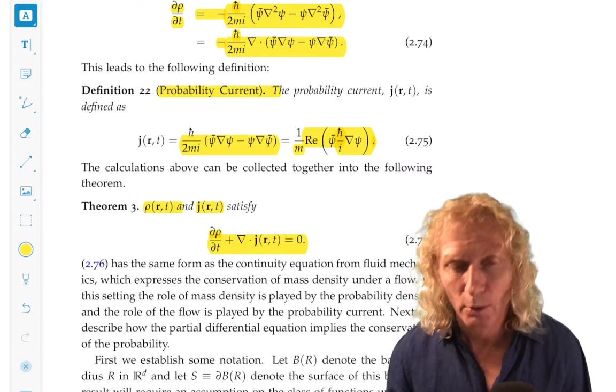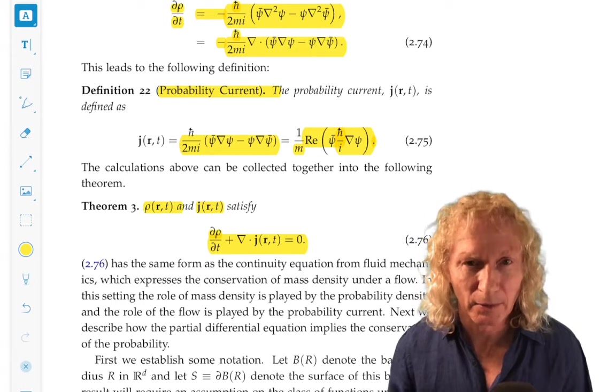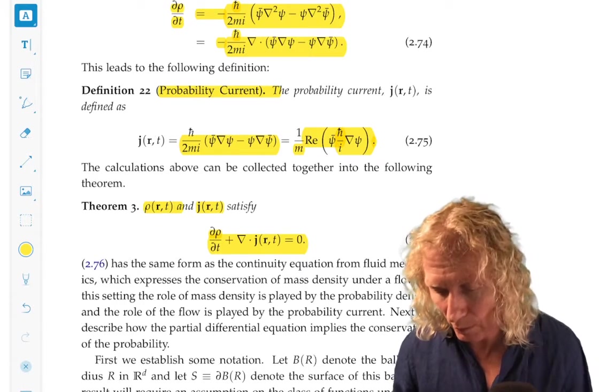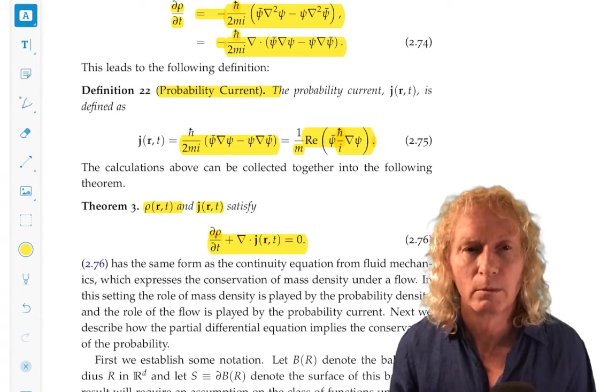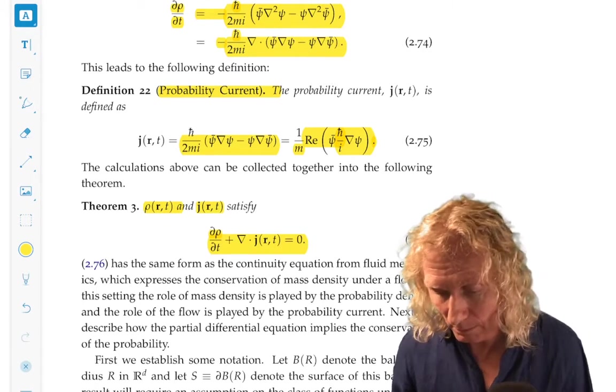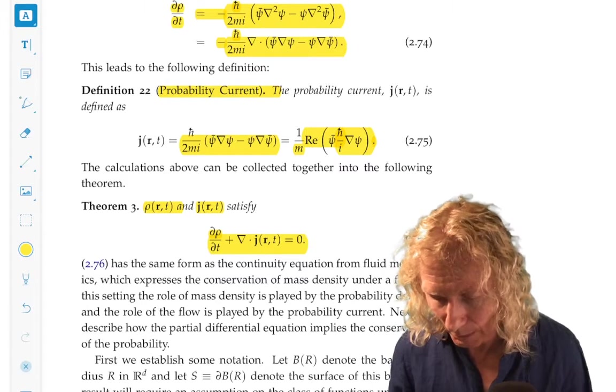And it has exactly the form. In fluid mechanics, ρ is the density, mass density, mass per unit volume. J would be the flux, ρ times the velocity field.